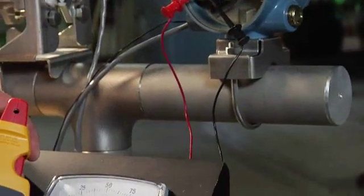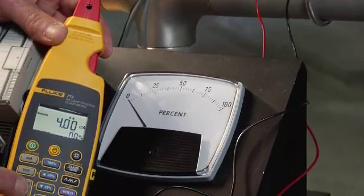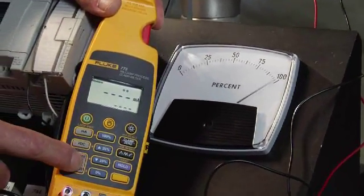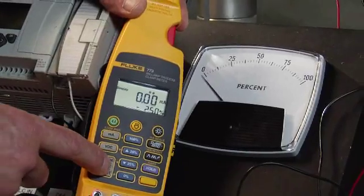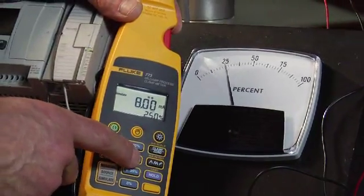If the local indicator responds correctly to the milliamp simulate signal, you have identified that the power supply and the loop are operating correctly and that the source of the problem is likely the transmitter or the input to the transmitter.